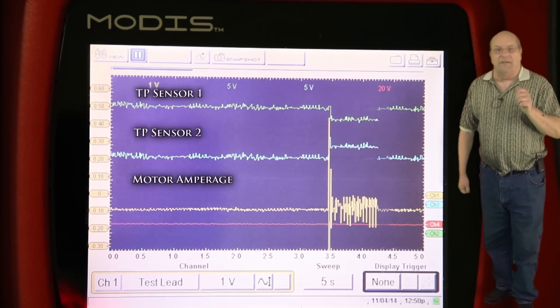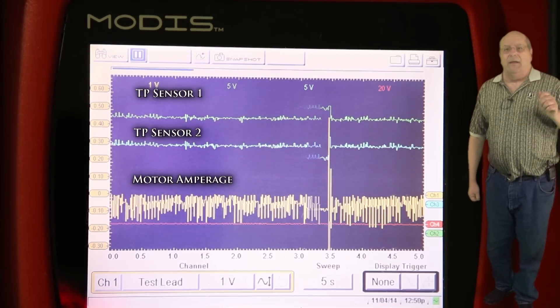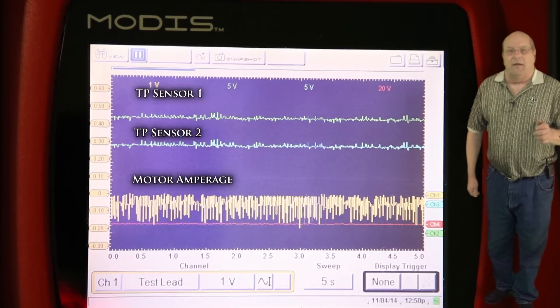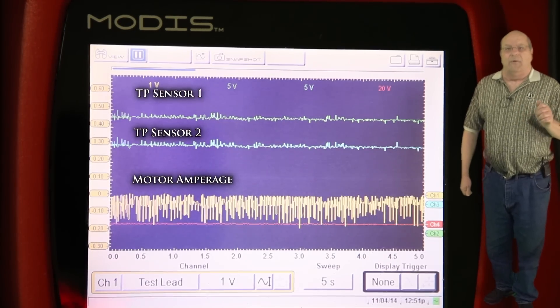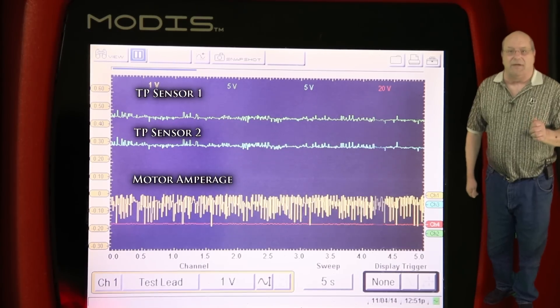The motor in these throttle bodies is a brush type, meaning it is very similar to a fuel pump. While testing the amperage draw of a fuel pump, you are looking at the amperage pumps created by the brushes and the commutators.